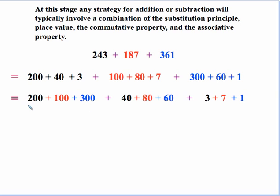But notice that we still have the numbers that we started off with. For example, we still have 243, we still have 187, and we still have 361. So in essence again we haven't changed anything, we just use our commutative and associative properties to rearrange our place values.